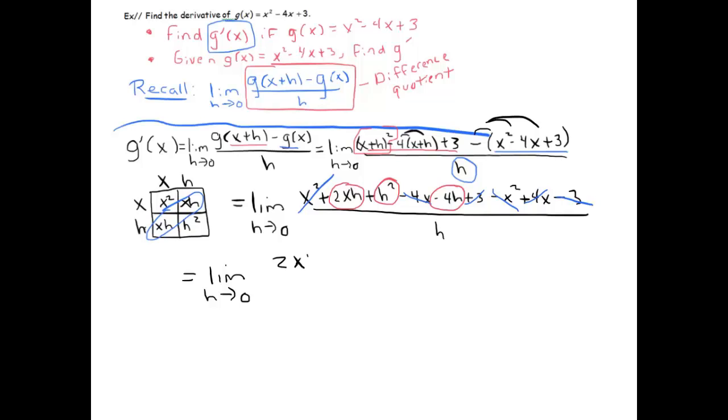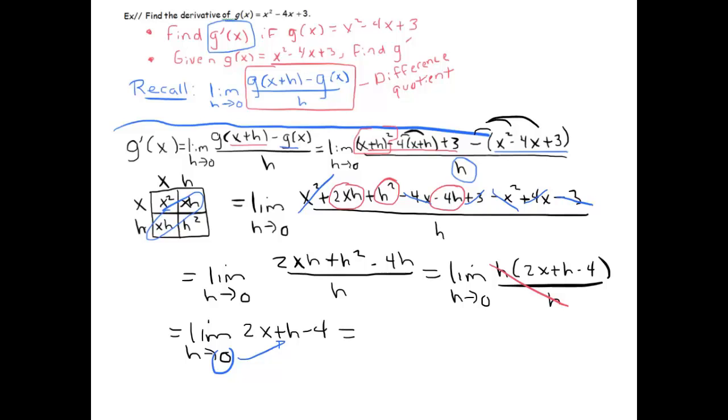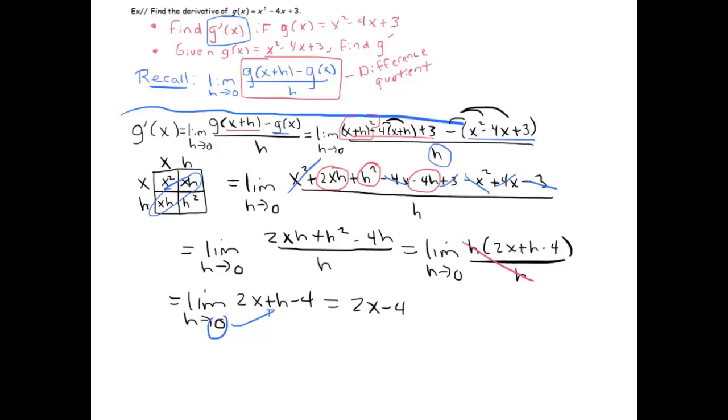I've got (2xh + h² - 4h)/h. The h in the top can factor out, leaving me with this. Finally, we get to divide that. That means I can finally substitute in my 0 for my h here. That just gives me 2x - 4. So we can say that g'(x) = 2x - 4. The derivative of g is 2x - 4.